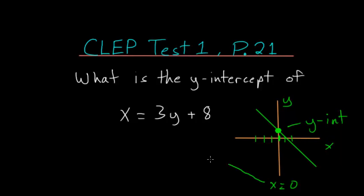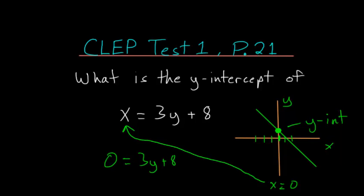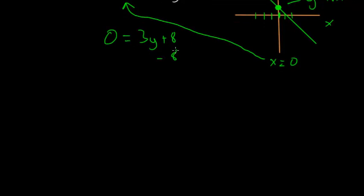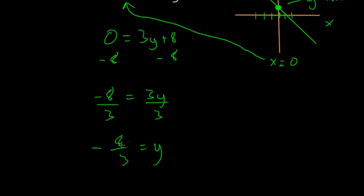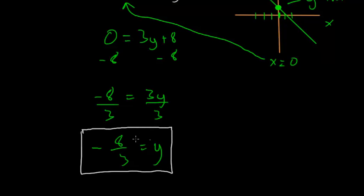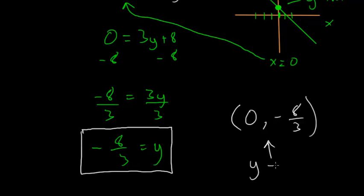So if we just plug x equals 0 into our equation here and solve for y, we can figure out what the y-intercept is. So 0 equals 3y plus 8, and if we subtract 8 from each side, then we have negative 8 equals 3y, and dividing by 3, we're left with negative 8 thirds equals y. So the point (0, -8/3) would be the y-intercept.